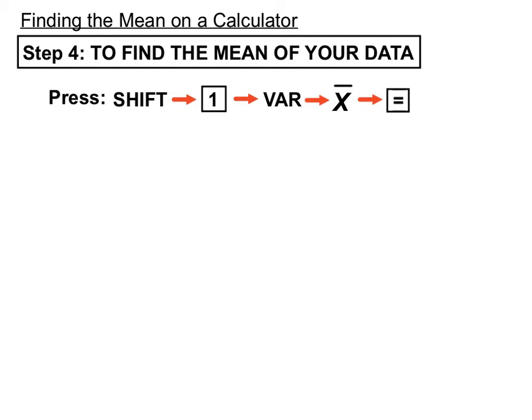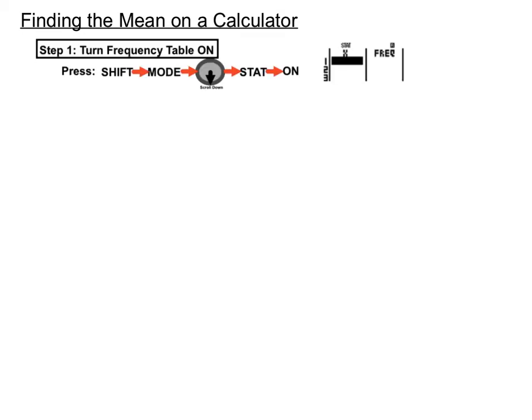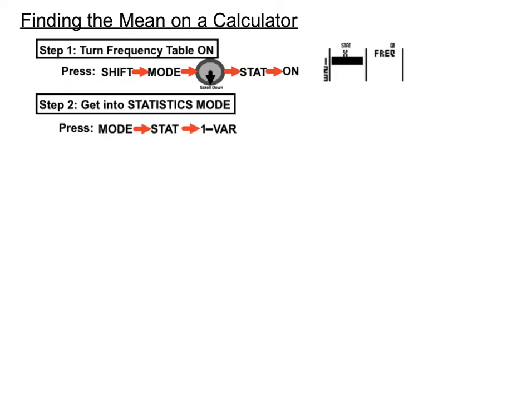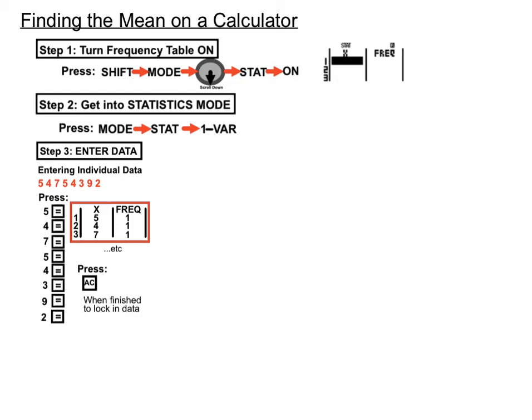To recap on finding the mean from a calculator: turn the frequency table on by going SHIFT, MODE, then arrow down to STAT and then ON. That'll give us a nice format for entering our data. Step two is to get the statistics mode turned on by pressing MODE then STAT then 1-VAR. Then enter the data. If it's individual data, press each item and then equals to lock that in. Remember the frequencies will have a default of one, which is no problem. Once we've finished entering our data, press AC to lock that data in.